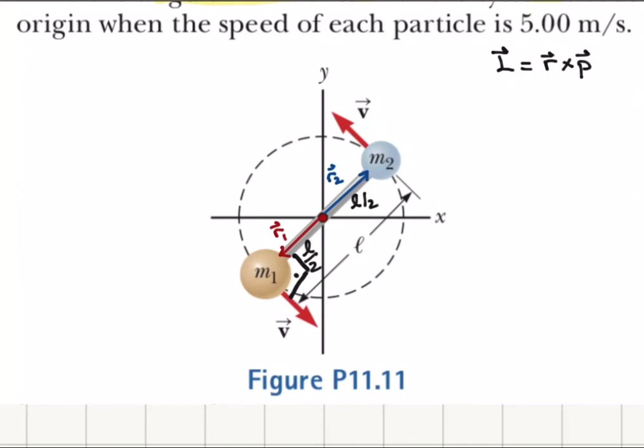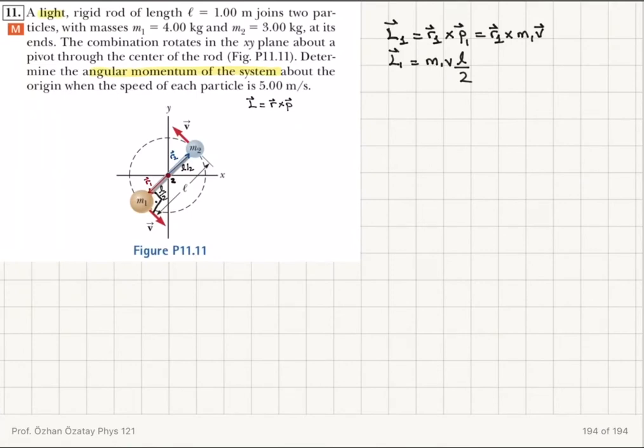In which direction is that going to be? Let me think about that using the right-hand rule. If I take r1 cross with p, and this is the z-axis coming out of the board, using the right-hand rule, it's going to be in the k hat direction.